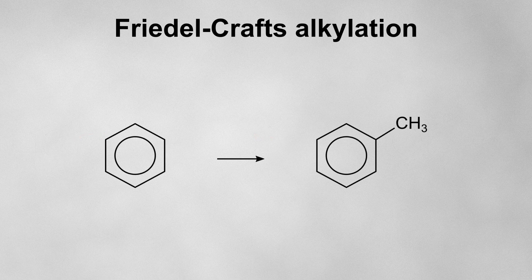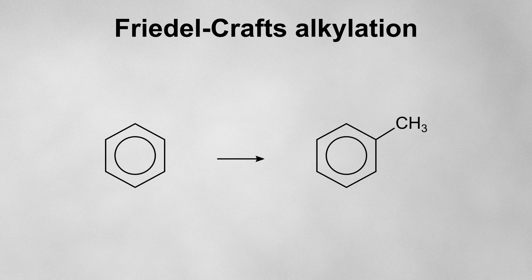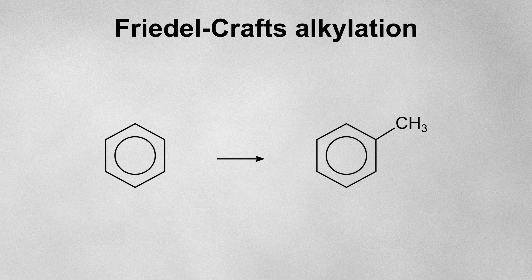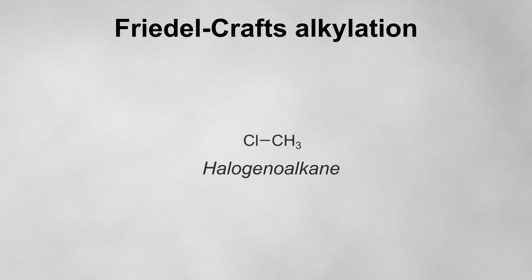Now, let's take a look at a Friedel-Crafts alkylation. This is essentially the exact same reaction as the chlorination we just looked at. But instead of substituting a halogen onto our benzene ring, we're going to substitute an alkyl group. So the reagent isn't going to be a halogen, it will be a haloalkane.